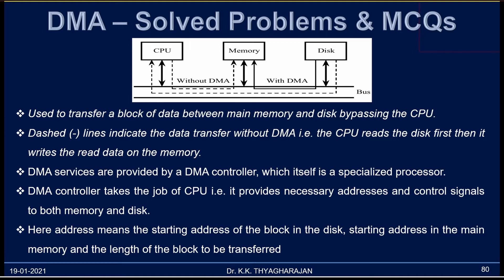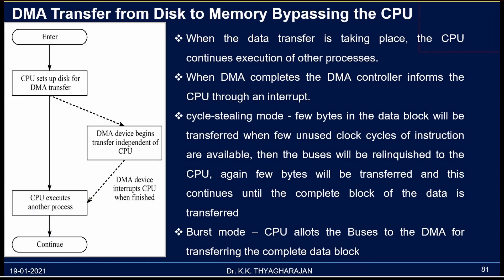To access data from the disk, an address should be provided for that data. If DMA is not available, the address will be provided by the CPU. But for DMA operation, the DMA controller will provide the address to the disk and also provide the address to the memory where the data block is to be stored. The DMA controller will also provide the number of bytes to be transferred and the read, write, and other control signals needed for transferring the block of data from disk to memory. To answer the multiple choice questions, you should understand the basics of DMA.